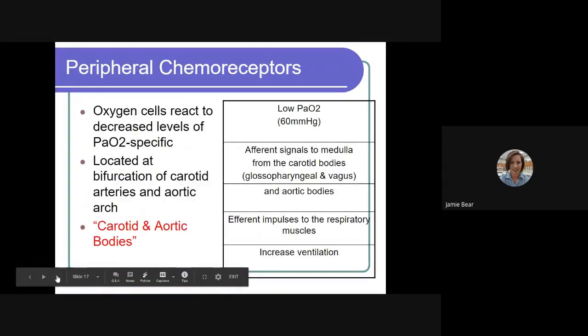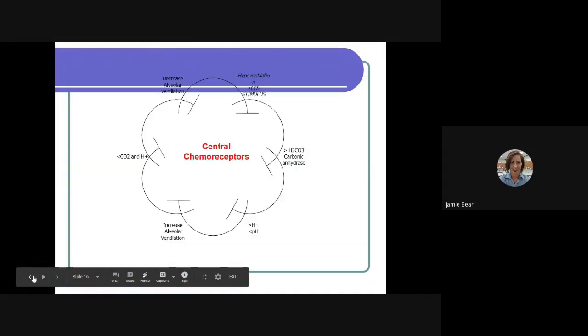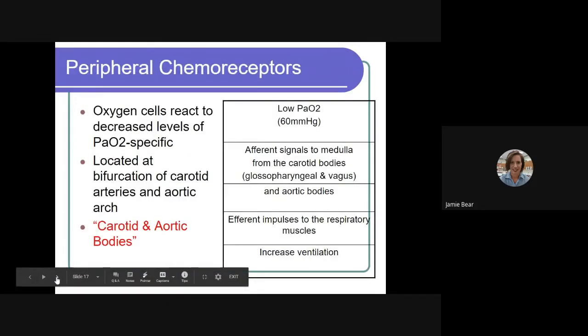Now, unfortunately, some people, when they have chronic carbon dioxide air trapping or chronic high levels of carbonic acid, so hypercarbia, then those patients will have a deactivation of these central chemoreceptors. And that's where our peripheral chemoreceptors come into play.